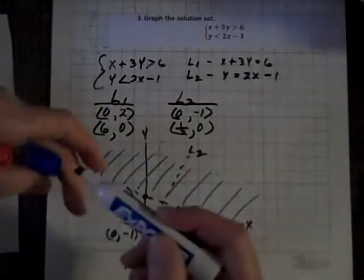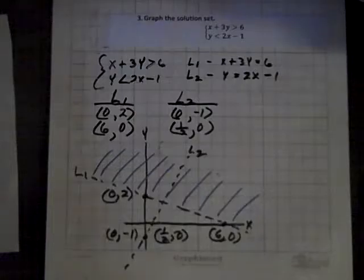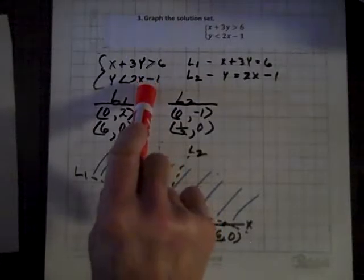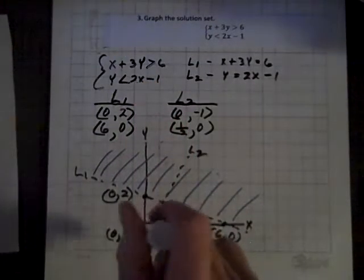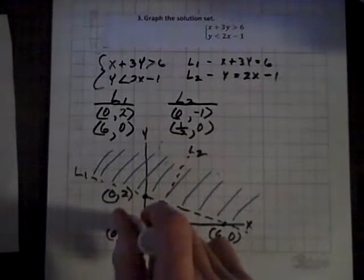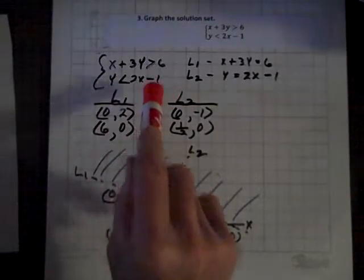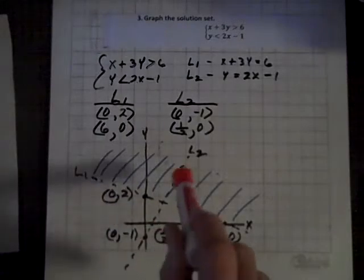So any point in that region will satisfy the first inequality. Now, for L sub 2, the second line and the second inequality, let's try the origin again. And if we let X be 0 and Y be 0, we'll get 0 is less than negative 1, and that's not true. So no point to the left of L sub 2 will satisfy this inequality.